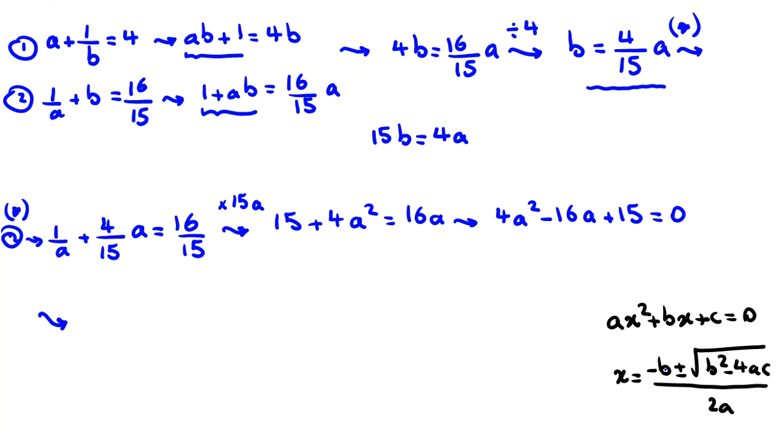Now we want to use that to solve this quadratic equation. You should memorize this, it's useful in many problems. a equals negative b, which is 16, plus minus b squared is 256 minus 4ac, which is 60, times 4 is 240 over 2a which is 8. So it will be 16 plus minus.